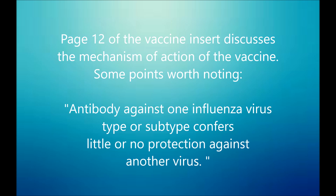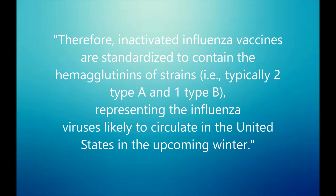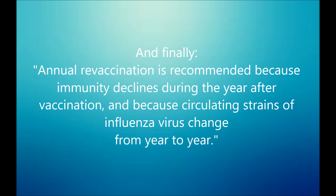Moving on to page 12, the vaccine insert discusses the mechanism of action. Points worth noting are that antibody against one influenza virus type or subtype confers little or no protection against another virus, and antibody to one antigenic variant of influenza virus might not protect against a new antigenic variant of the same type or subtype. The vaccine insert also states that inactivated influenza vaccines are standardized to contain the guest strains likely to circulate in the United States in the upcoming winter.